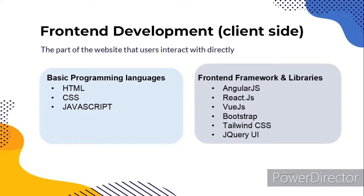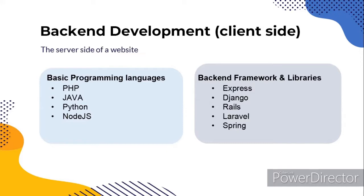Now let's talk about back-end development. Back-end is the server side of a website. It is the part of the website that the user cannot see and interact with, and it does not come in direct contact with the users. It is used to store and arrange data. Back-end developers work with languages such as PHP, Java, Python, and Node.js. The list of back-end frameworks and libraries includes Express, Django, Rails, Laravel, and Spring.